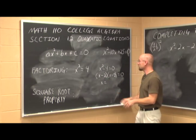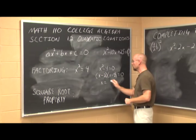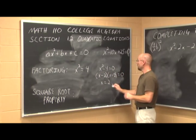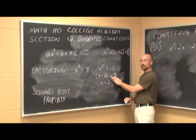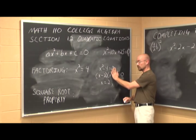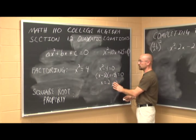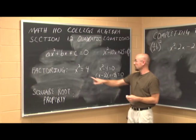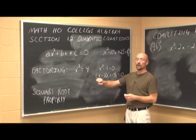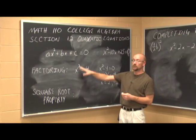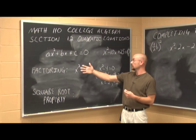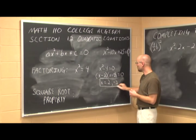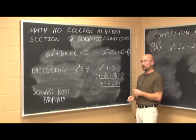Using the zero factor theorem: if x equals 2, then 2 minus 2 is 0, and 0 times anything is 0. If x equals negative 2, then negative 2 plus 2 is 0. So we have solutions 2 and negative 2. We can check: 2 squared equals 4, and negative 2 squared is also 4, since a negative times itself is positive. Both solutions hold true in the original equation.